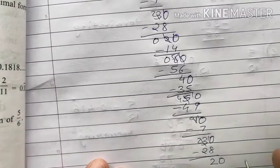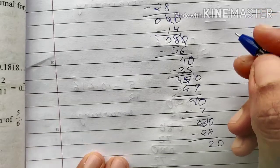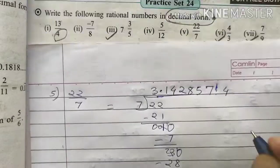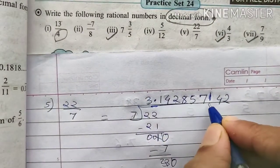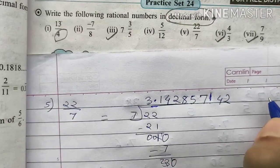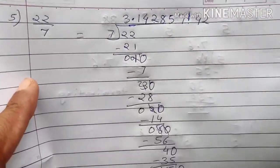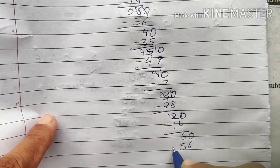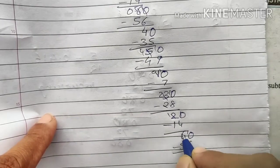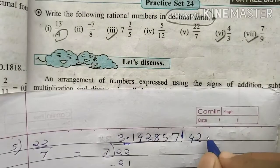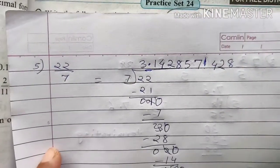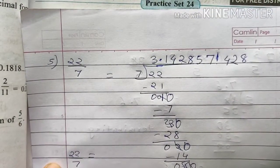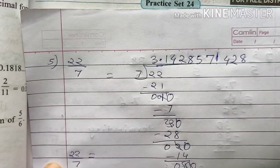Continuing the division: 7 fives are 35, remainder 6; adding zero gives 7 ones are 7, remainder 3; 7 fours are 28, remainder 2 — and we can see 142857 is repeating again. The next will again be 8, since 7 eights are 56, remainder 4, and so on. This is the time you should stop.